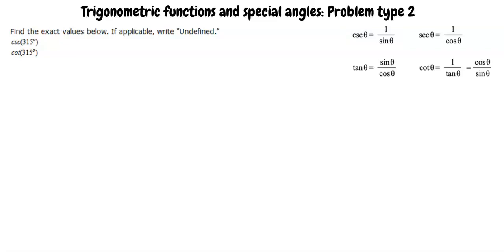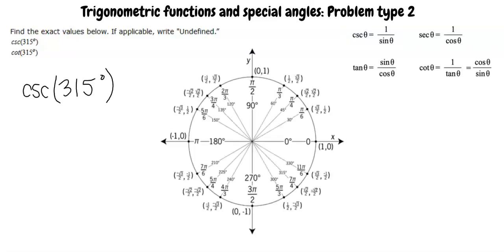Let's pull up the unit circle. We know that 315 degrees is in the fourth quadrant. Recall that the point where the terminal side of our 315 degree angle meets the unit circle is cosine theta, sine theta, where x equals cosine theta and y equals sine theta.